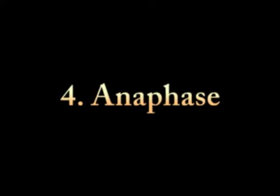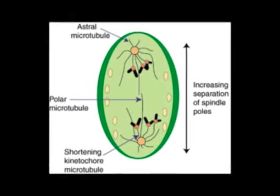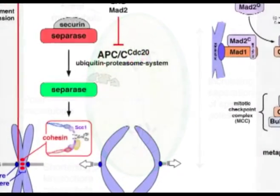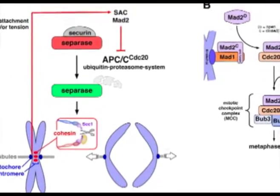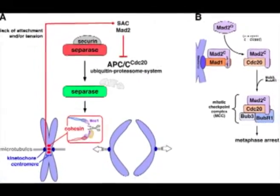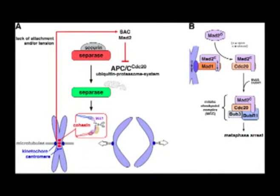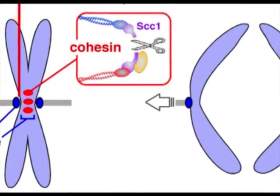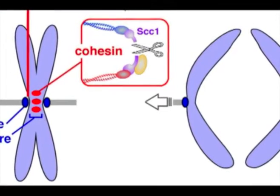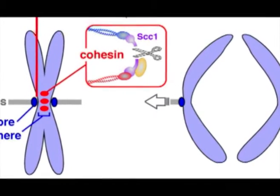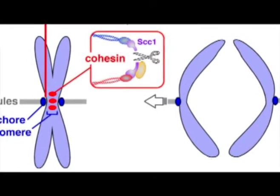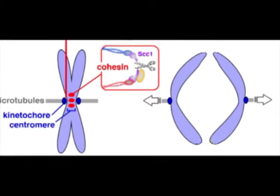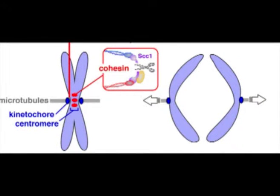Anaphase: It is the shortest stage of mitosis. During anaphase, an enzyme called separase degrades the multiprotein complex called cohesins, which held together the sister chromatids at their centromeres. The centromeres divide and the sister chromatids of each chromosome are pulled apart and move to the opposite ends of the cell. The kinetochores are pulled by kinetochore spindle fibers and are assembled at the centrosomes.